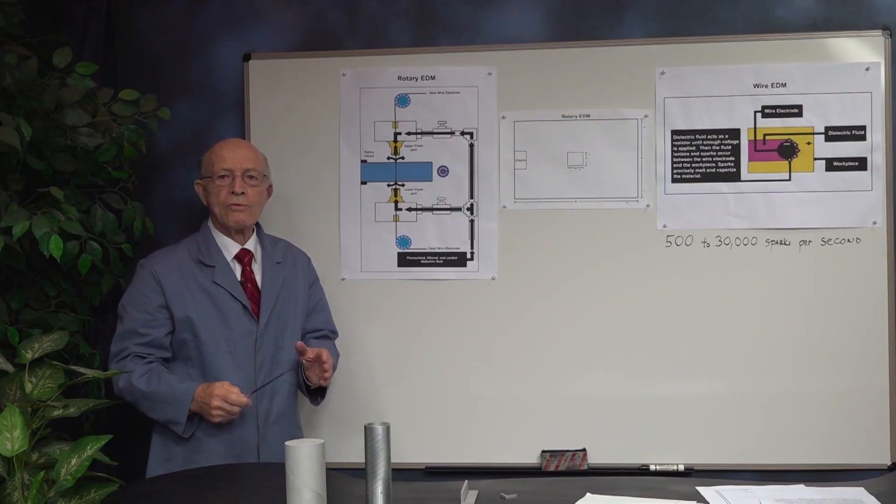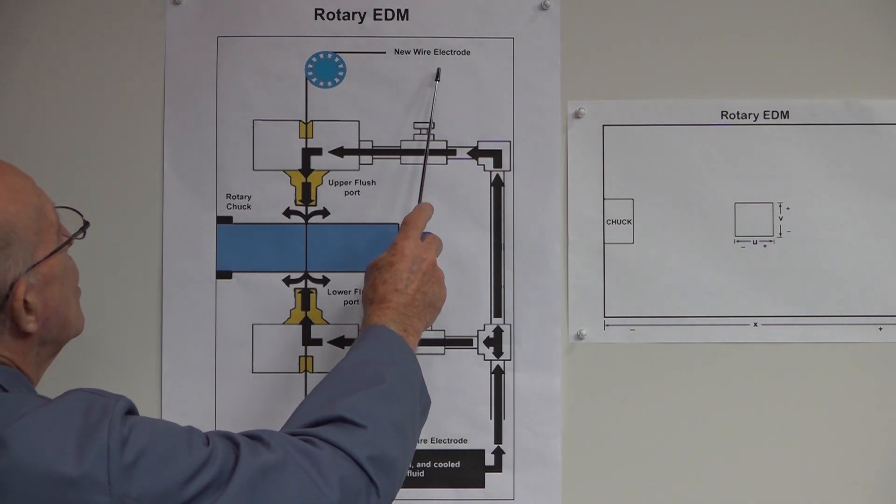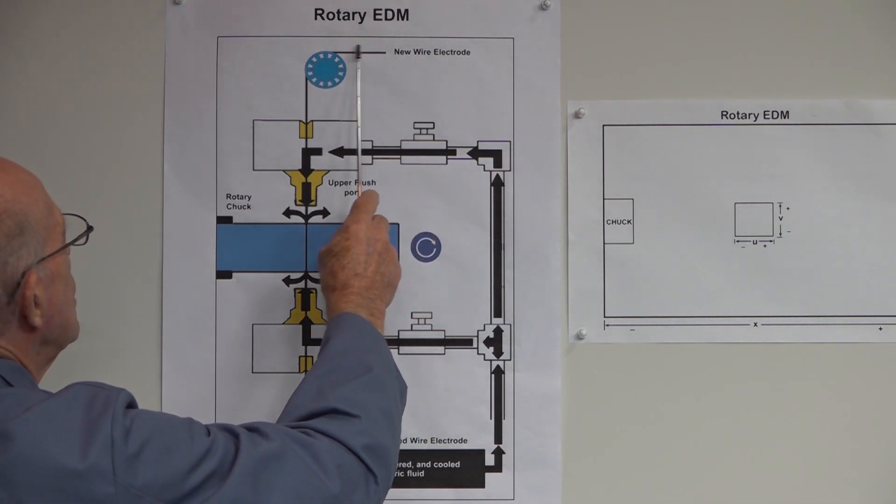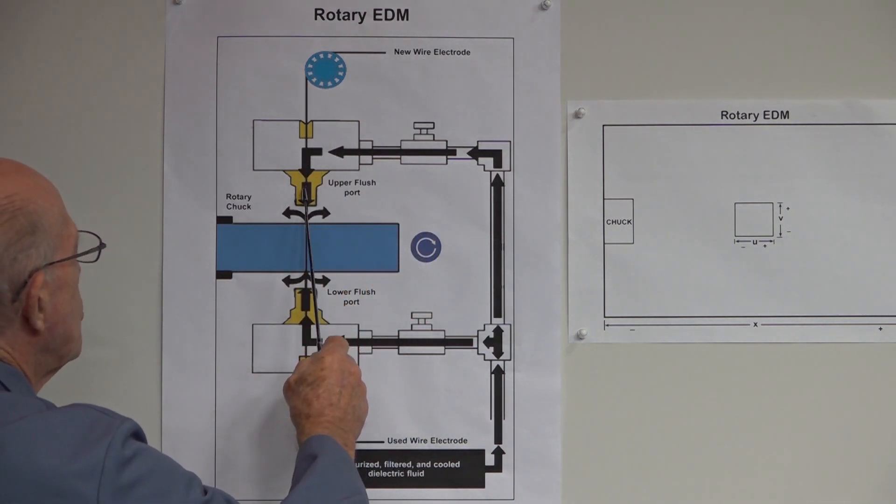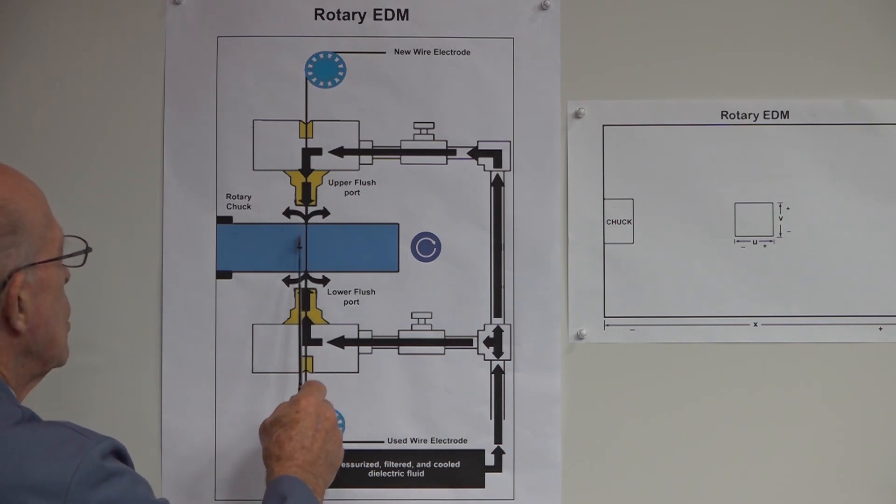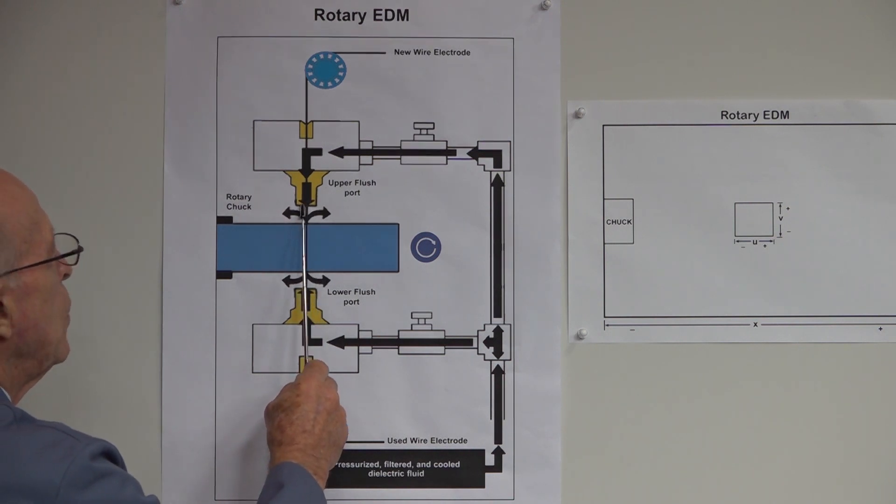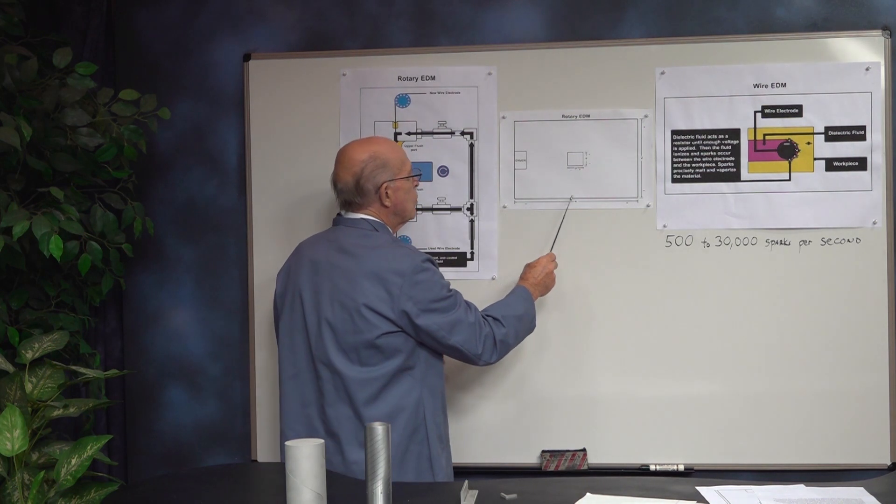Let's look at this shot of rotary EDM, or electrical discharge machining. The wire electrode comes in here, goes through the flush ports, and comes out here, and it's used just once, the wire, never used again. And the water comes through here, and here's the rotary chuck that rotates, and that can rotate at different speeds. And we also have here, this is the UV, and we have a diagram over here about the UV.